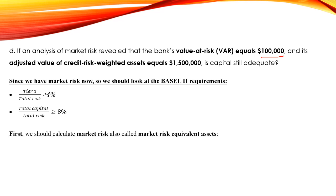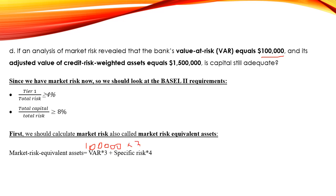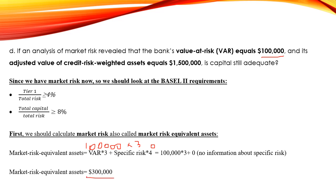The market risk equivalent assets are equal to VaR times 3, plus specific risk times 4. The VaR is $200,000. Since we have no information about specific risk, we assume it equals zero. Therefore, market risk equivalent assets = $200,000 × 3 + 0 = $300,000.